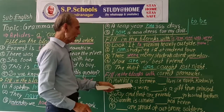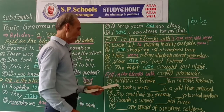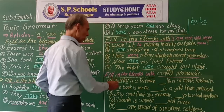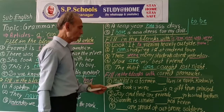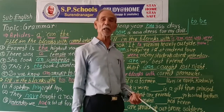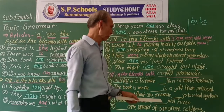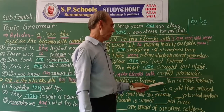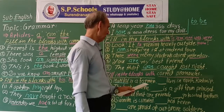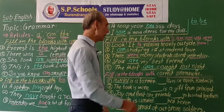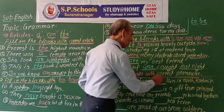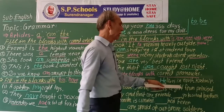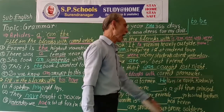Motilal is a farmer. Motilal is a singular name — names are always taken in third person. So Motilal → 'he'. He lives in North Kashmir.